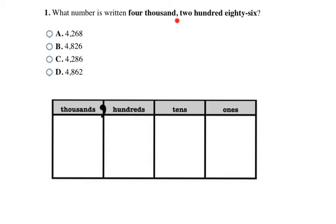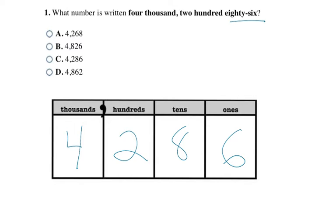This part asks what number is written as four thousand, two hundred and eighty-six. I'm taking it from written form and putting it in standard form. Four thousand means I'll have a four in the thousands place, two hundred means a two in the hundreds place, and eighty-six is just written eight-six. I used the chart to help with this problem, which is fine — just make sure you can also do it from memory. So four thousand two hundred and eighty-six is my final answer, which is choice C.